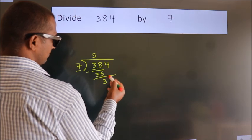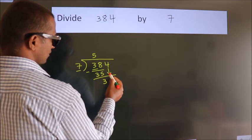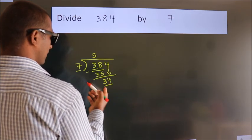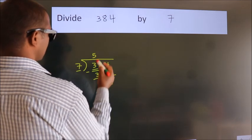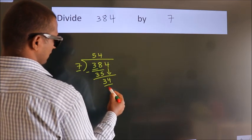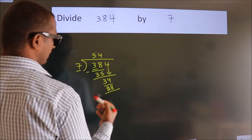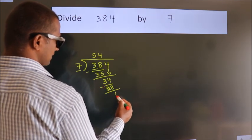After this, bring down the beside number. So 4 down, so 34. A number close to 34 in the 7 table is 7 fours, 28. Now we subtract, we get 6.